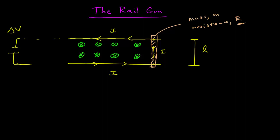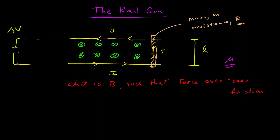We're going to ask the question: what is B such that the magnetic force overcomes friction? Just as an example. There's some coefficient of friction between the bar and the rails, which is mu, and we want to know what's the minimum B such that it will start to accelerate to overcome the force of friction.